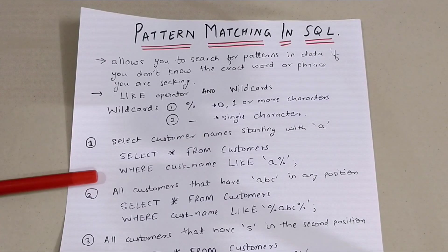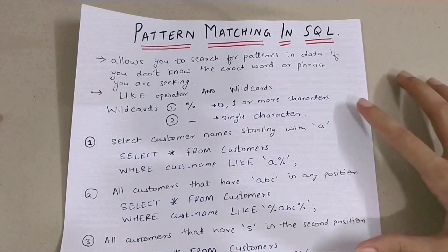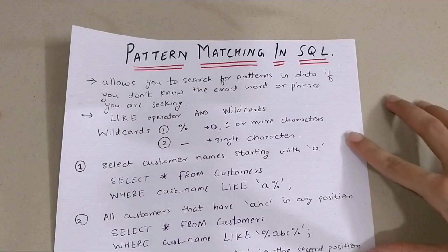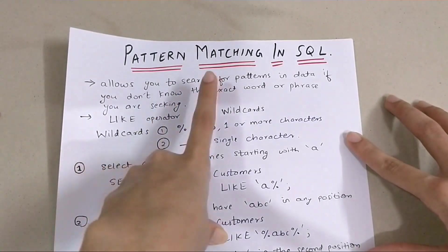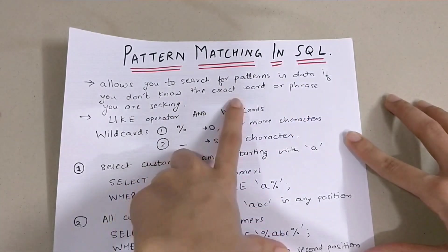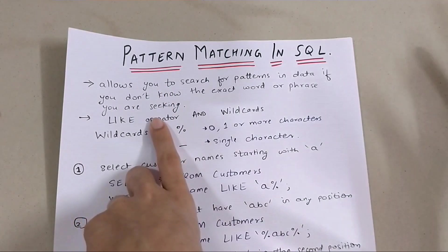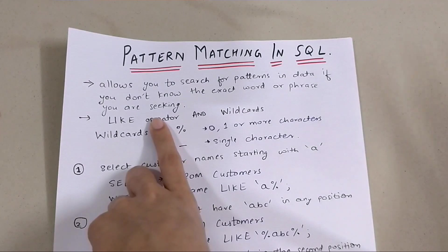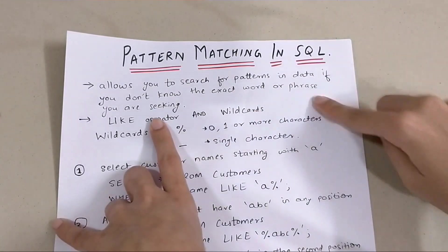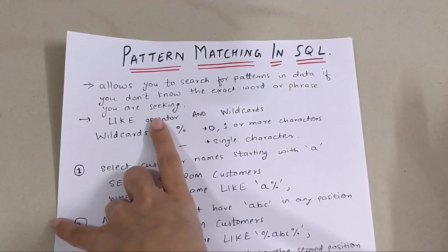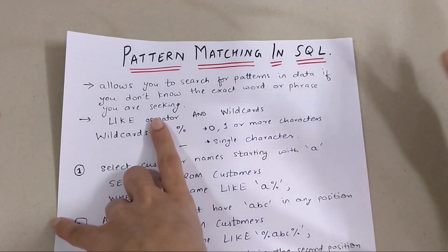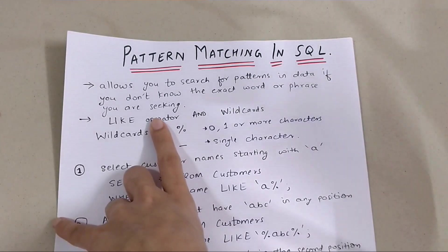Hello everyone, welcome back to my channel. In this video we are going to see what is pattern matching in SQL. Pattern matching basically allows you to search for patterns in data if you don't know the exact word or phrase you are seeking. For example, you have a table named employees and you want to find all employees whose name starts with S, or you don't remember a company name exactly but you know it starts or ends with some particular letters.